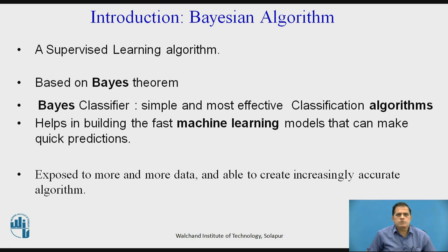First, an introduction to Bayesian algorithms. A Bayesian algorithm is a supervised learning algorithm in machine learning. It is a part of artificial intelligence and is totally based on the Bayes theorem. The Bayes theorem states that all the data in a dataset comes together and we build a model using the Bayes classifier, which is a very simple and most effective classification algorithm that helps in building fast machine learning models that can make quick predictions.